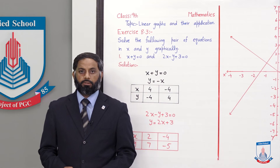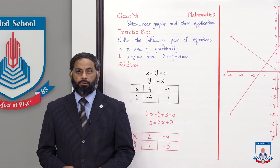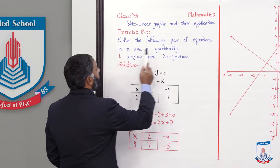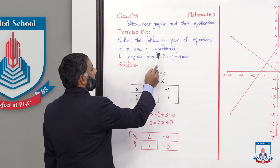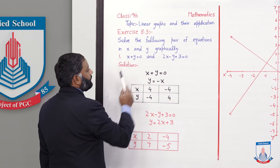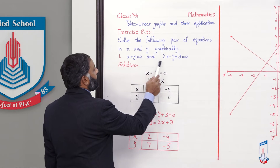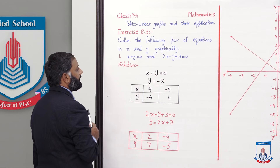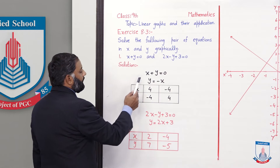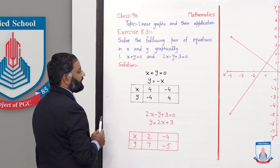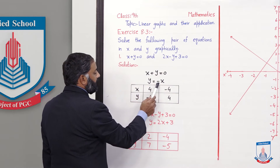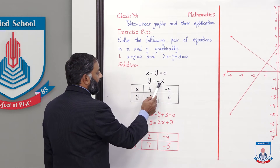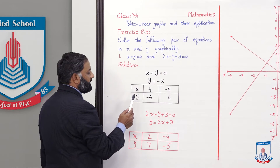Students, exercise 8.3 का question number 1 समझते हैं। Solve the following pair of equations in x and y graphically. दो equations given हैं, हमें इन दोनों equations को solve करना है — means x और y दो unknown values हैं, इनकी values find करनी हैं। Equation 1 हमें given है: x + y = 0। x को right side पे ले जाएं तो y = -x equation आएगी।